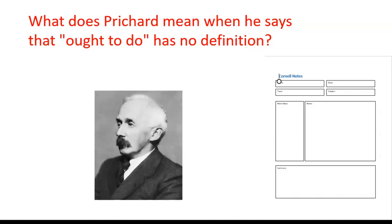Today is our second lesson on intuitionism. Last lesson we had a general introduction and we had a look at Moore — remember that Moore criticises naturalism. Hopefully by now you have done the quiz on Teams that I have set for you. It's a Microsoft Office multiple-choice quiz, so do that before you do this lesson. That's my way of checking that you understand the previous stuff, so before I end the unit I can go over anything that lots of you misunderstand.